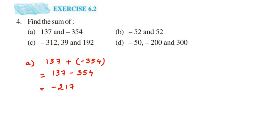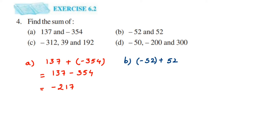The next question is -52 + 52. Two different signs means we have to subtract. So it will be 52 - 52, which equals 0. When you subtract a number from itself, the answer is always 0.